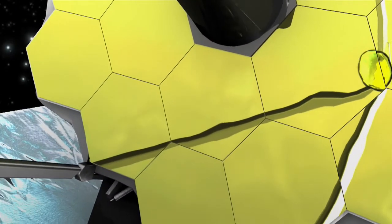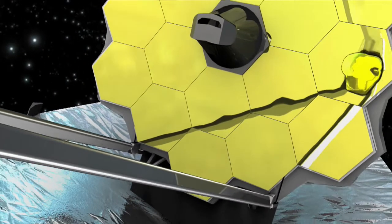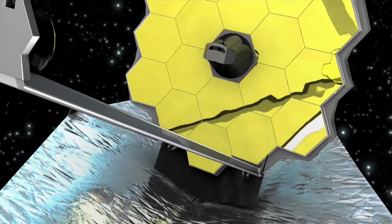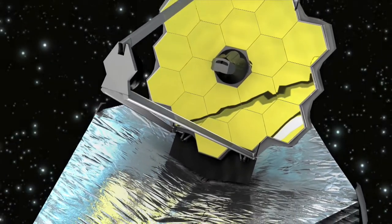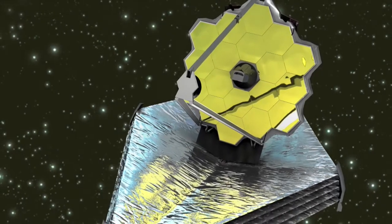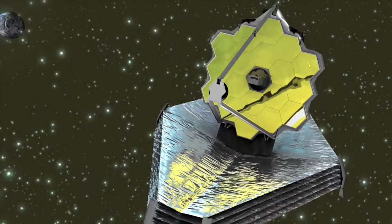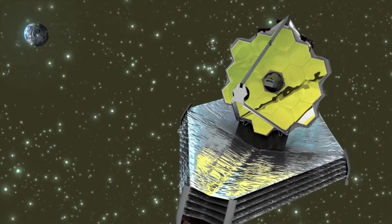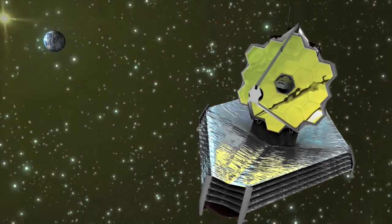All objects, including telescopes, emit infrared light, which makes the faint infrared light from the distant early universe difficult to detect. This light could easily be obscured by brighter and closer infrared sources such as the Sun, Earth and Moon.